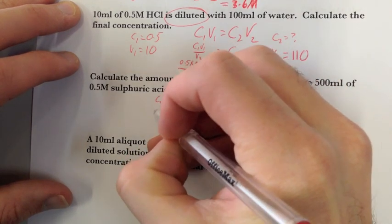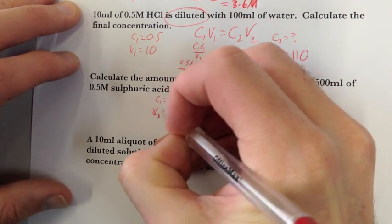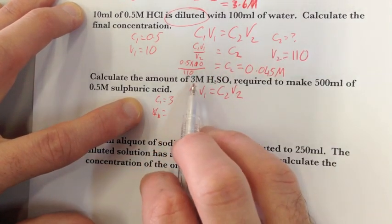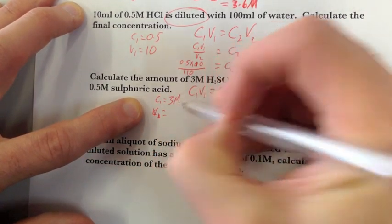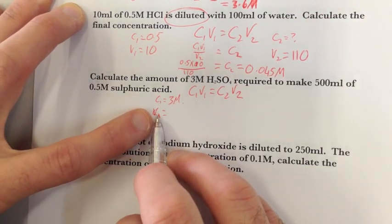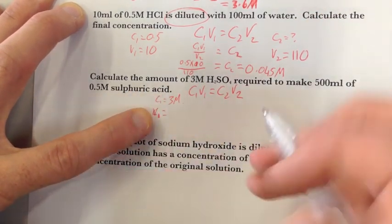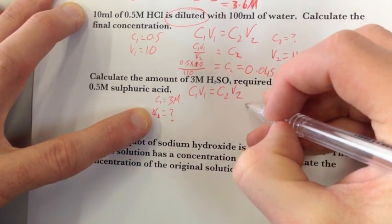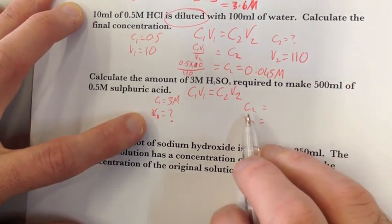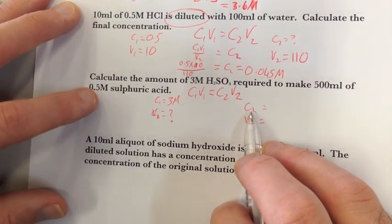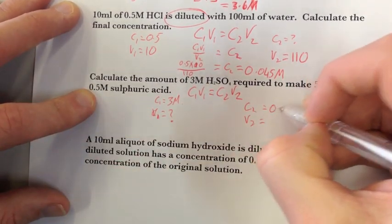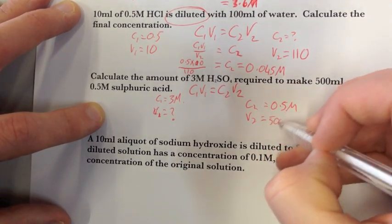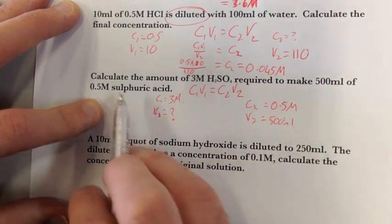C1V1. So my initial concentration is obviously 3 molar, because that's what I'm starting off with. My initial volume, I don't know, because I want to know how much I need to use to make my final volume. My C2 and V2 is, my concentration 2 is 0.5 molar, because that's how much I'm ending up with, and I'm making 500 mils of it. So I'm going to write 500 mils of that solution.